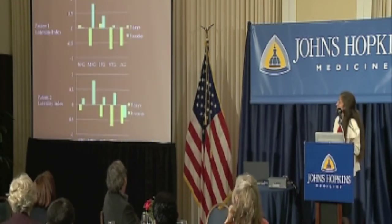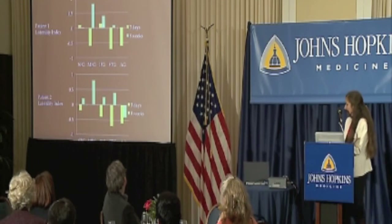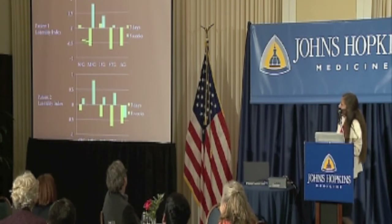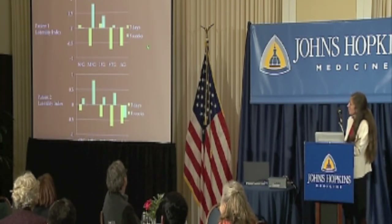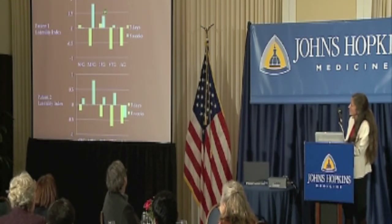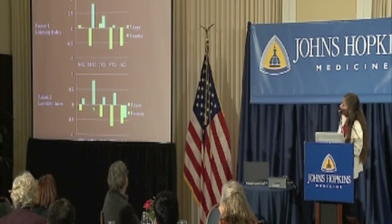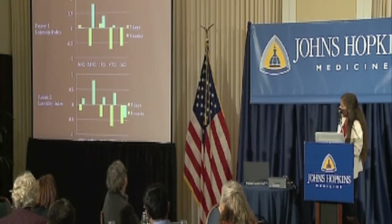This is something called the laterality index, which quantifies the pattern: when the bars go down, most activation is in the right hemisphere; when they go up, most is in the left hemisphere. For both patients, at three days it was mostly right hemisphere activation, and at eight weeks it was mostly left hemisphere activation — showing a clear shift during recovery.